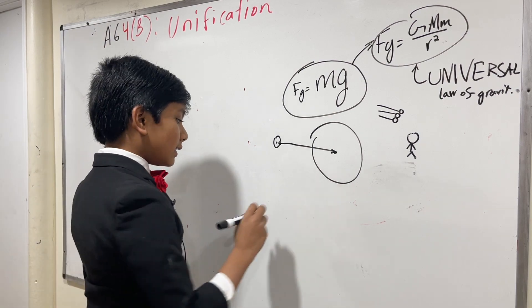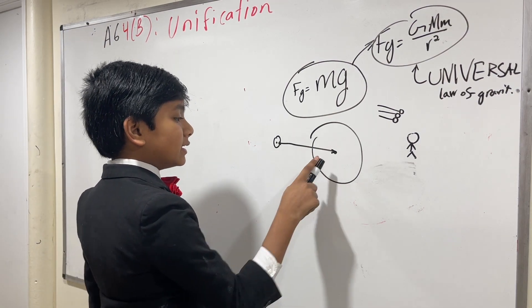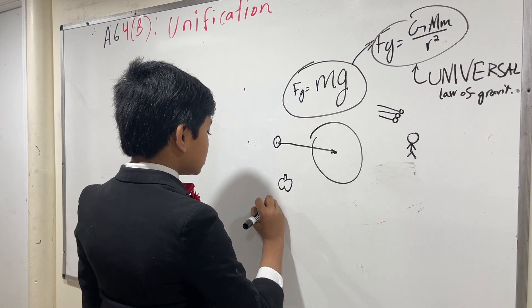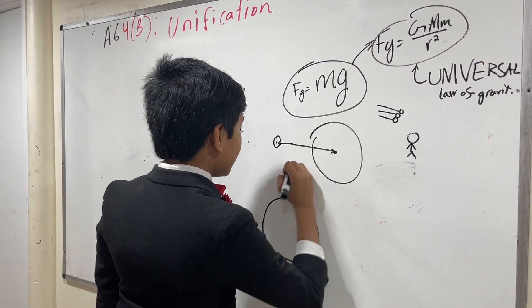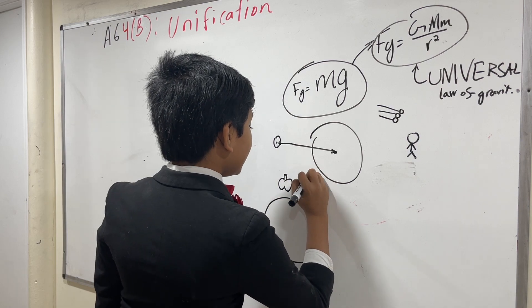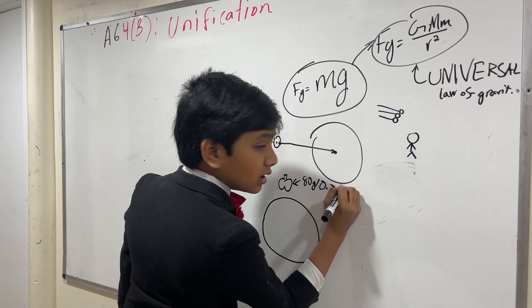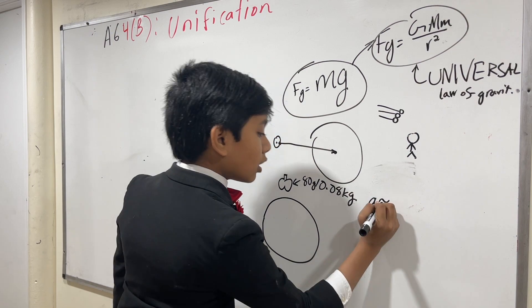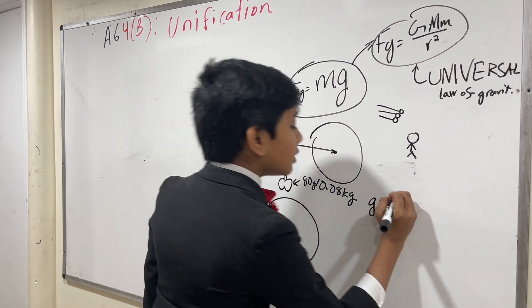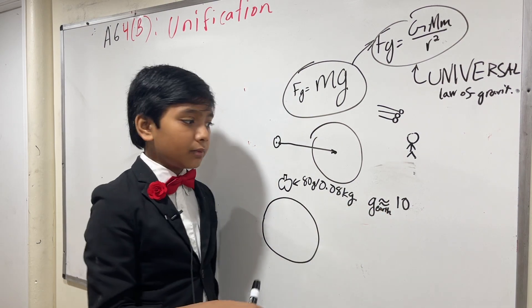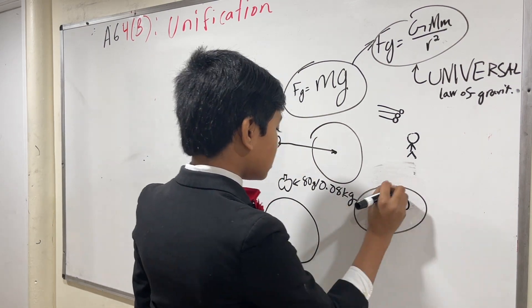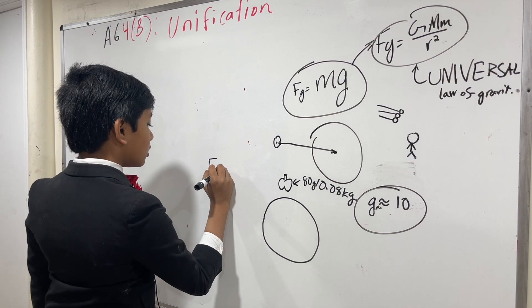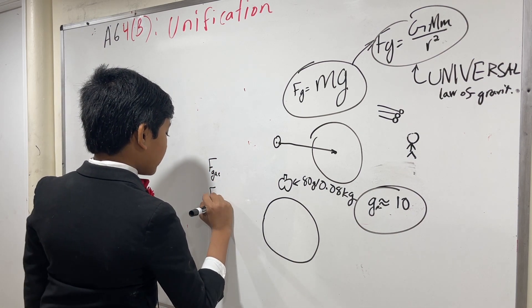So now, let's give an example of this attraction between the centers of two bodies with an apple. What is the apple's attraction to earth? Let's say this apple is 80 grams, or 0.08 kilograms. So now, assuming that g, or the gravitational constant on earth, is about 10, let's just say it's 10, not 9.8. Then, what is the force of gravity exerted by the apple on earth and the force of gravity exerted by earth on the apple?